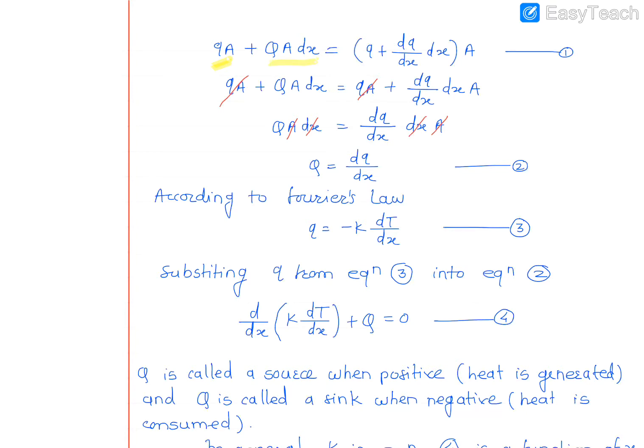If you simplify this by multiplying by A in the bracket, you get QA + (∂Q/∂x)·dx·A. The QA terms will get cancelled, so these two terms will get cancelled, and then we will have Q·A·dx = (∂Q/∂x)·dx·A.